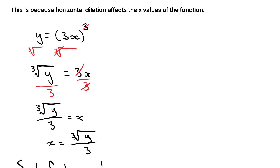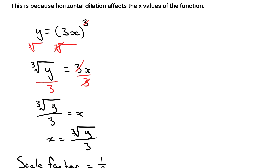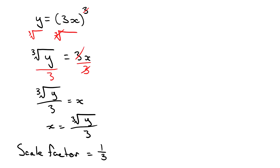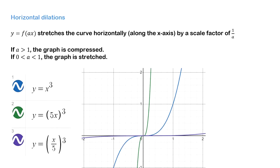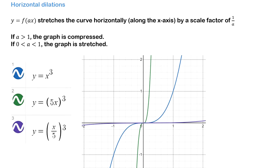This is an inverse variation and the scale factor for horizontal dilations is 1 over a. This is because the horizontal dilation affects the x values of the function. So with horizontal dilations, the curve is stretched horizontally by a scale factor of 1 over a. If a is greater than 1, the graph is compressed. If a is between 0 and 1, the graph is stretched.